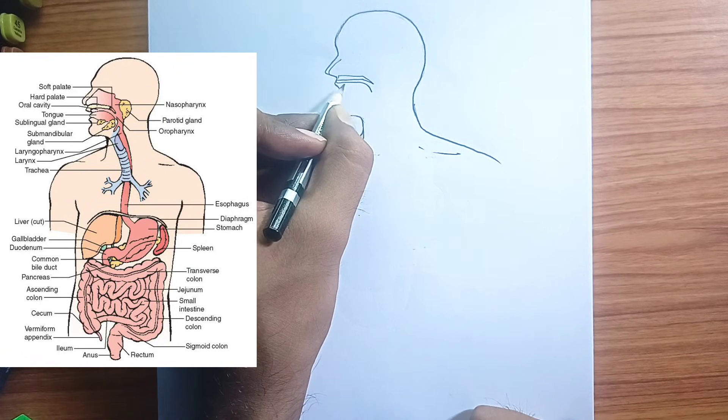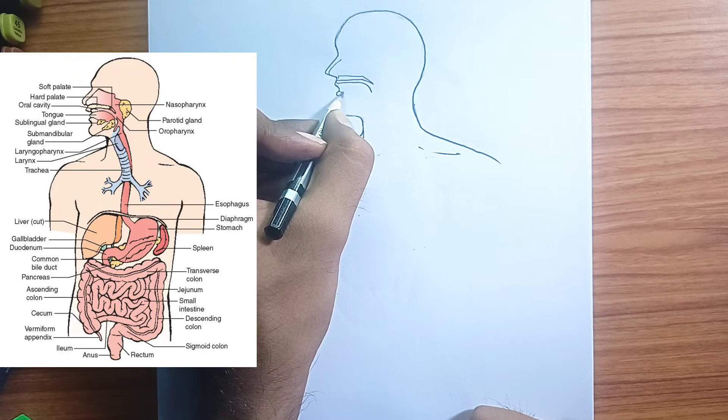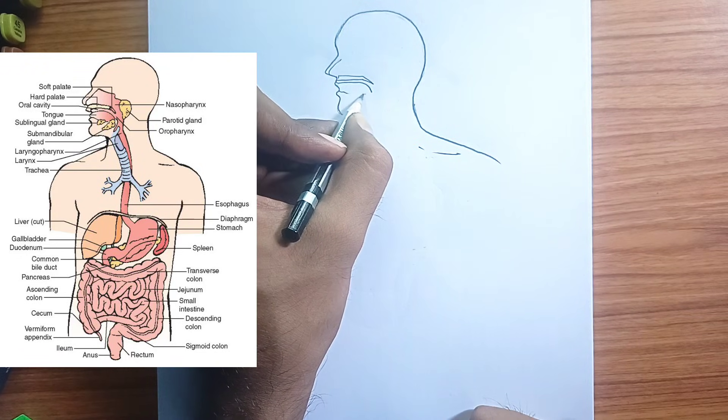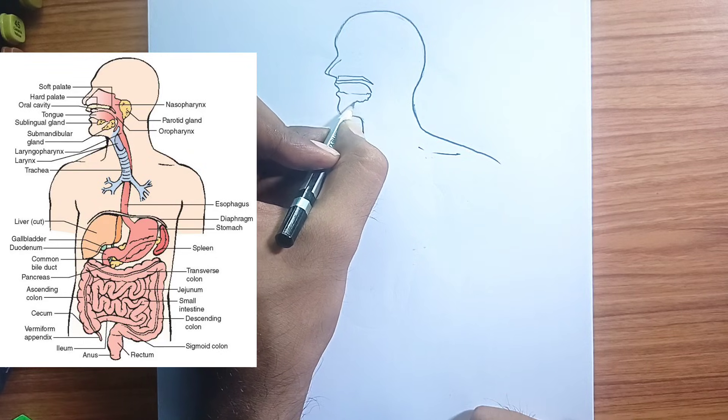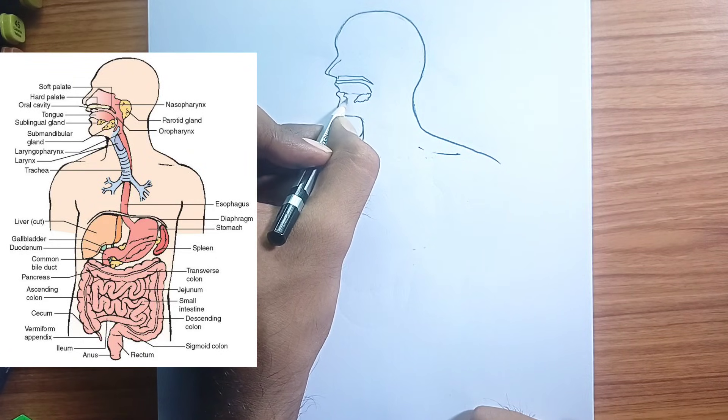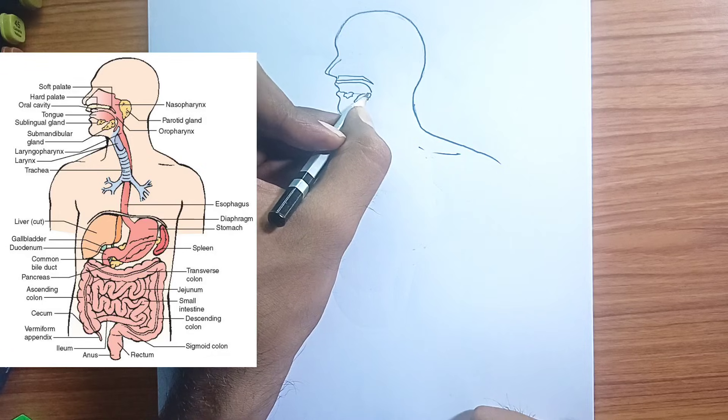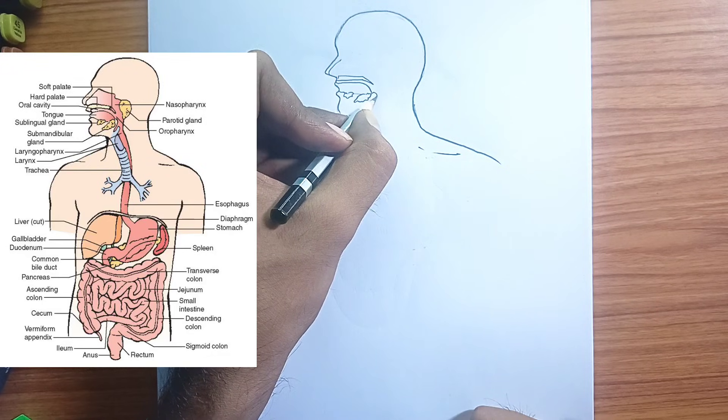Accessory organs. Salivary glands produce saliva to moisten food and start carbohydrate digestion. Liver produces bile, which helps in fat digestion. Gallbladder stores and concentrates bile.